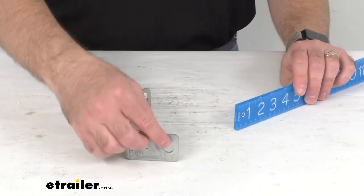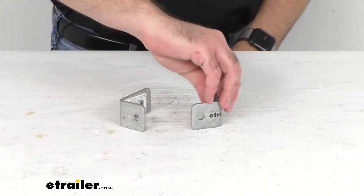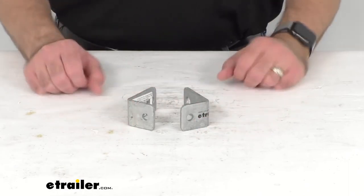The diameter of these holes is three-eighths of an inch, and you will receive one pair of these brackets.